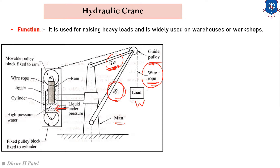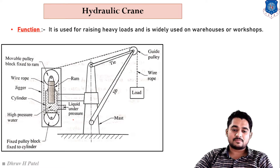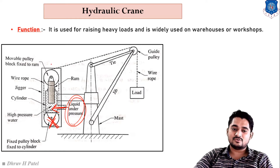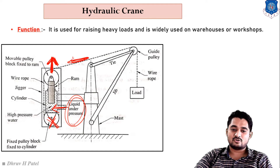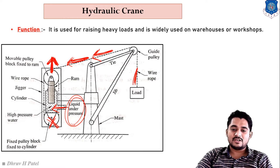Similar to the hydraulic lift, there is a piston and cylinder assembly. One fixed pulley is at the bottom side and one movable pulley is attached at the higher side with the use of a piston and cylinder — for the piston we can also use a ram. In the hydraulic crane, if we want to lift a load W, we supply liquid under pressure. The fixed pulley is not movable, but the sliding ram causes the moving pulley to move in the upper side direction, applying a tension force in the wire rope, so our load is lifted upward.